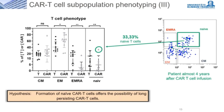Most samples analyzed were taken at peak, approximately two to three weeks after CAR T-cell infusion, because often only at that time were sufficient CAR T-cells detectable for subgroup analysis. In two patients, however, sufficient CAR T-cells were still detectable over a long period of time. In one example, a flow cytometric analysis four years after CAR T-cell administration showed 33% naive CAR T-cells. Our hypothesis is that formation of naive CAR T-cells may offer the possibility of long-persisting CAR T-cells.